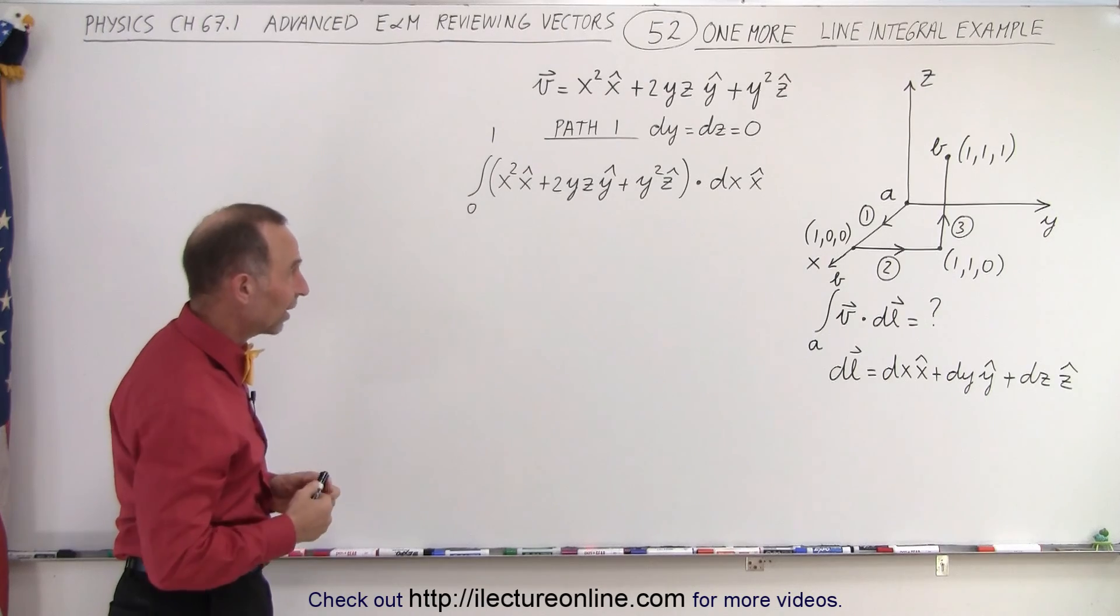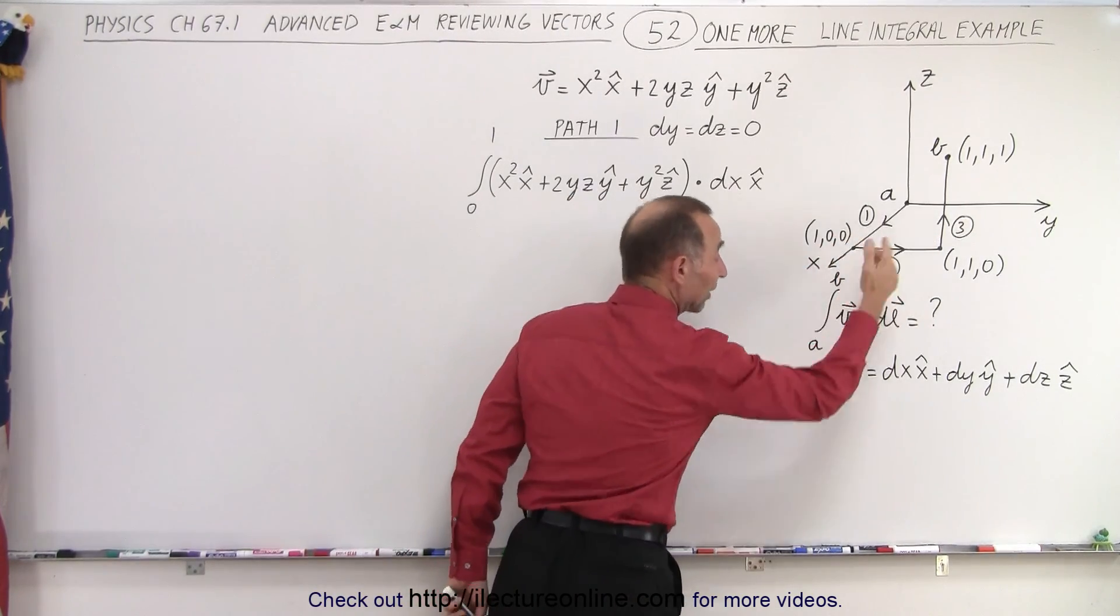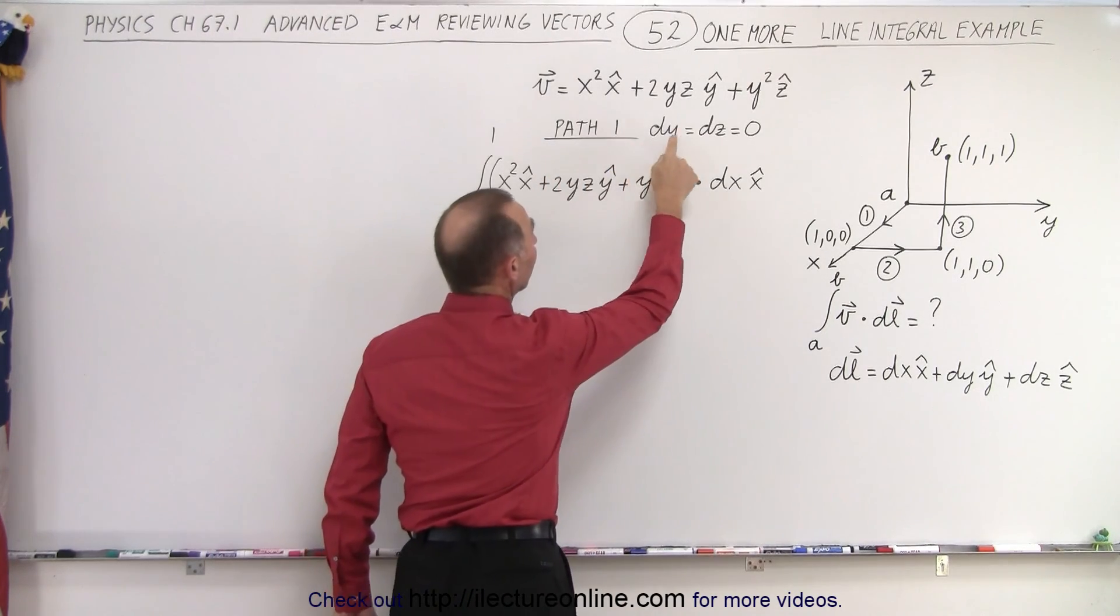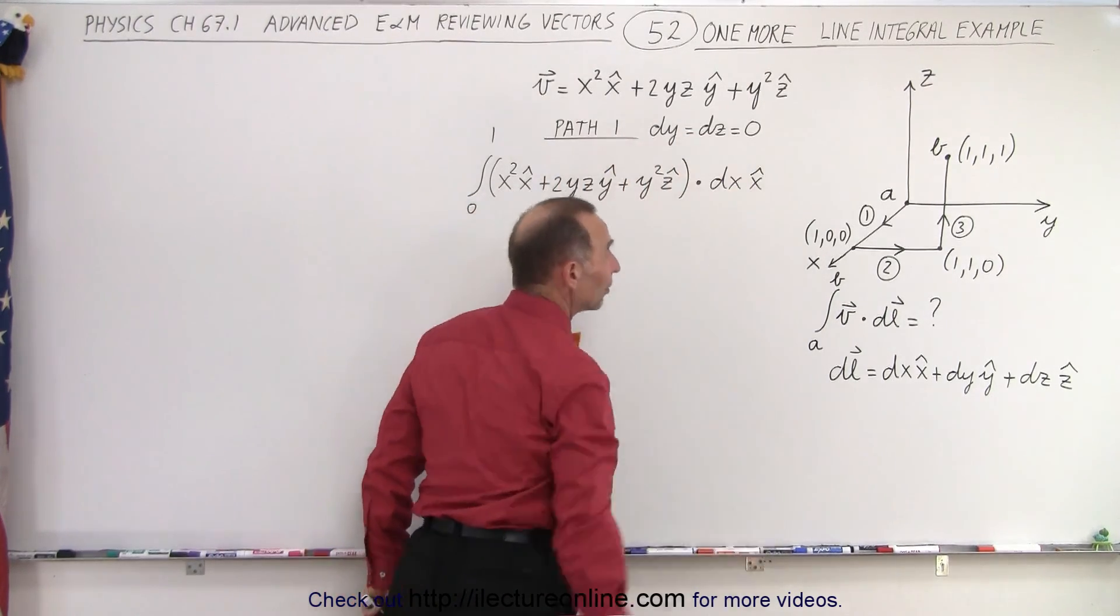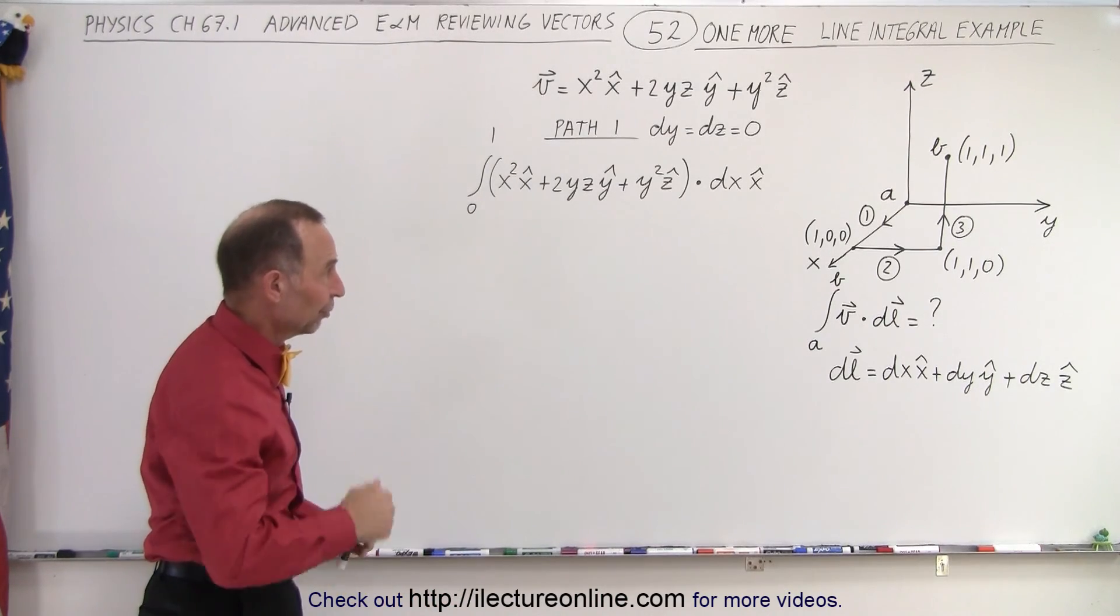Here I already get ourselves a head start. We're going to start along path 1, then along path 2, then along path 3, and add them all together. Along path 1, dy and dz are equal to each other and they're equal to zero because we're not moving along the y or the z direction on our first path.